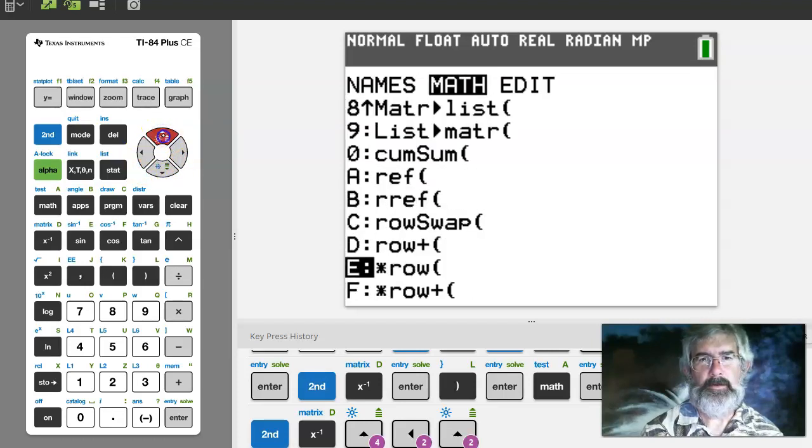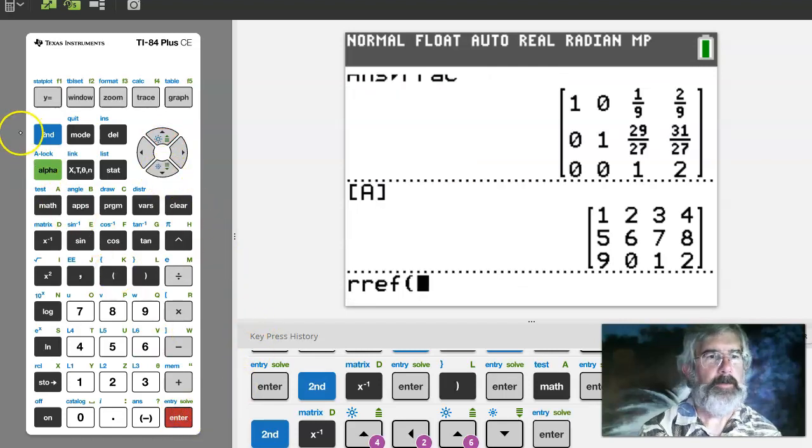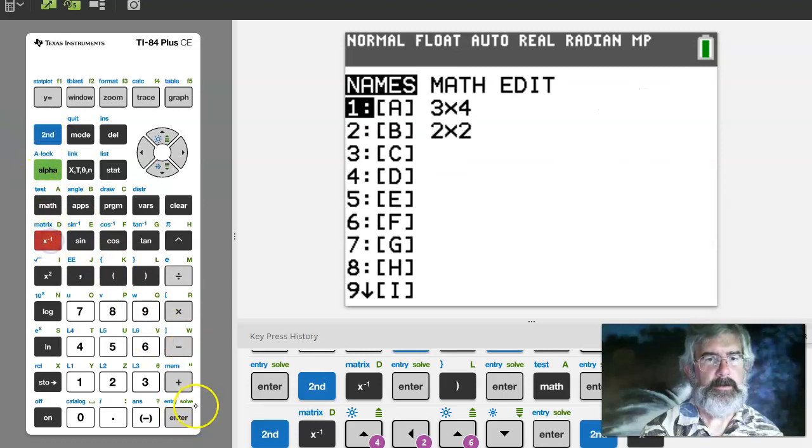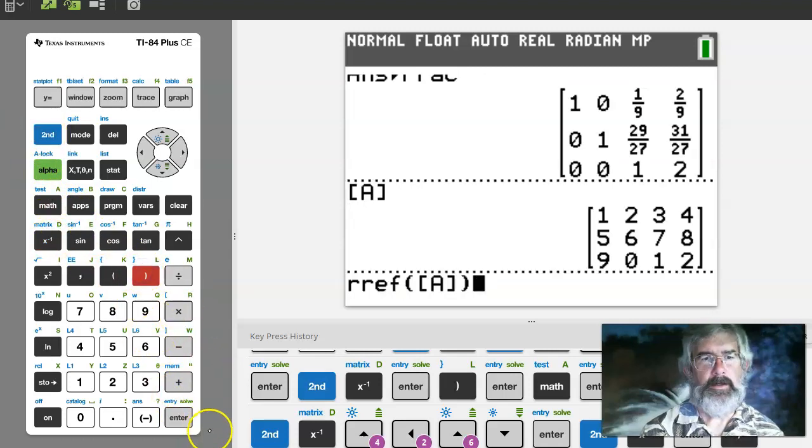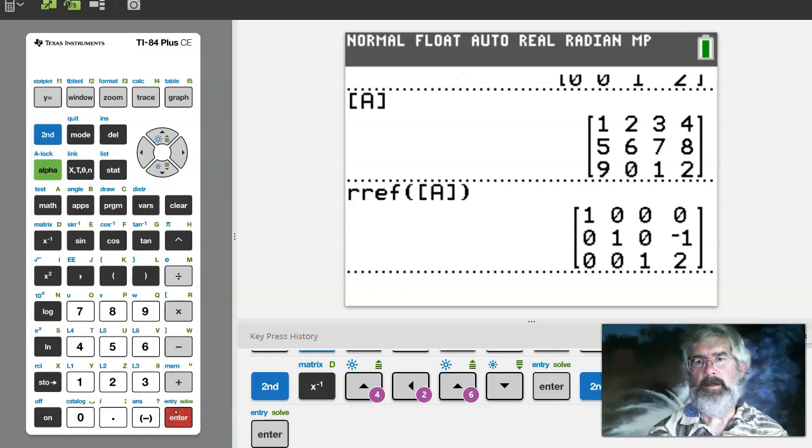So I want reduced row echelon form of matrix A. And then it gives me the reduced row echelon form.